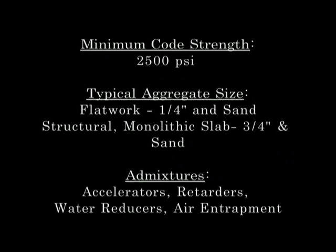When you're deciding what strength concrete to use, you want to look into your local code book. In general a 2,500 pounds per square inch mix will be strong enough for any code. When you're deciding what aggregate size to use, if you're doing simple flat work like a sidewalk, a quarter inch gravel and sand is a good mix because it's a little more workable. When you're doing a structural monolithic slab, we're using a three quarter inch gravel and sand as the aggregate, which gives it a little more structural strength but is still workable.